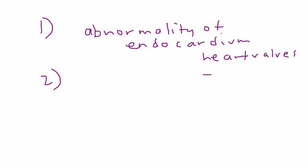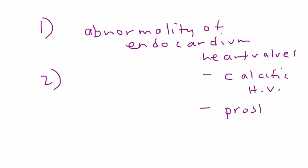Examples of these include calcific heart valves and prosthetic heart valves — those valves that I talked about very briefly earlier. There has to be something wrong with them, maybe a congenital defect or some sort of abnormality. So that's the first thing.